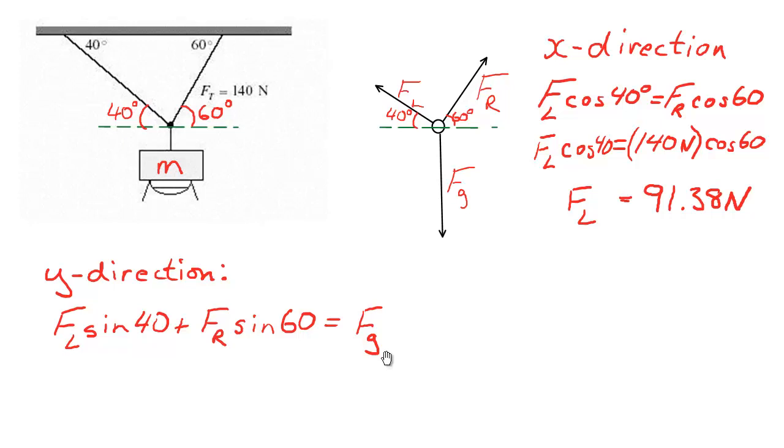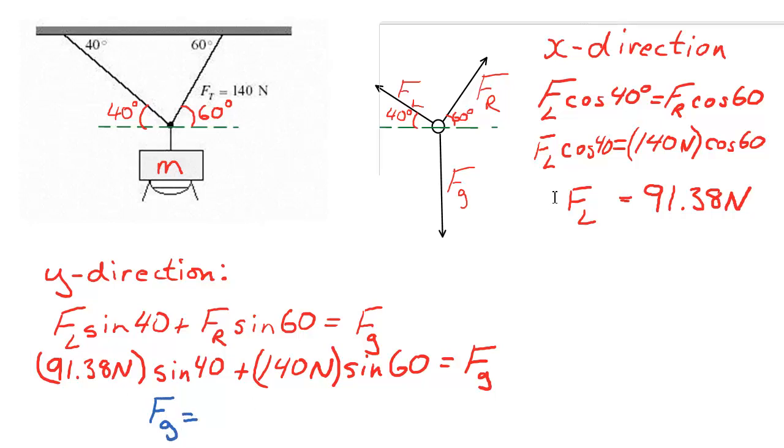All we need to do now is fill in the values. Remember that FL we've already discovered to be 91.38 Newtons. So what's that going to look like? Our equation simply becomes... And we end up getting a value for Fg equal to 179.98. Notice I'm keeping a few decimal places at this stage. I don't want to do any rounding until the very end of my very final answer.